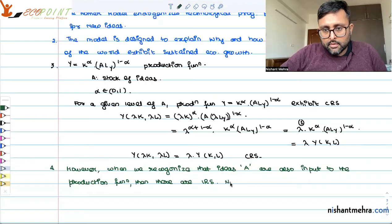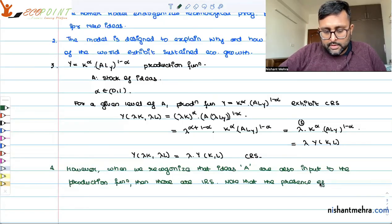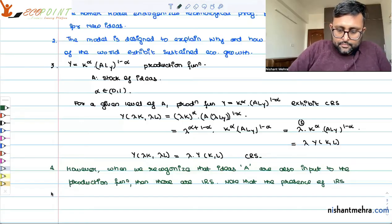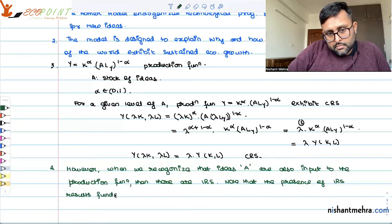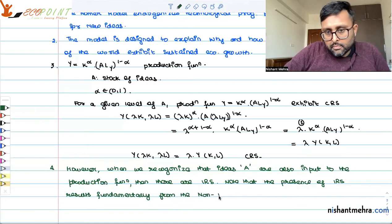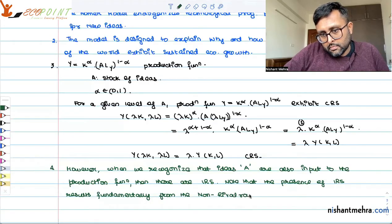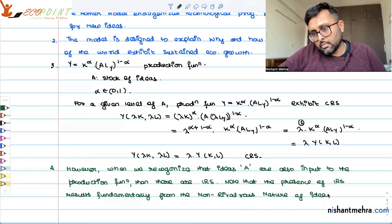That is coming fundamentally from the non-rivalrous nature of the ideas which you have already talked about in economics of ideas. So note that presence of increasing returns to scale results fundamentally from the non-rivalrous nature of ideas.